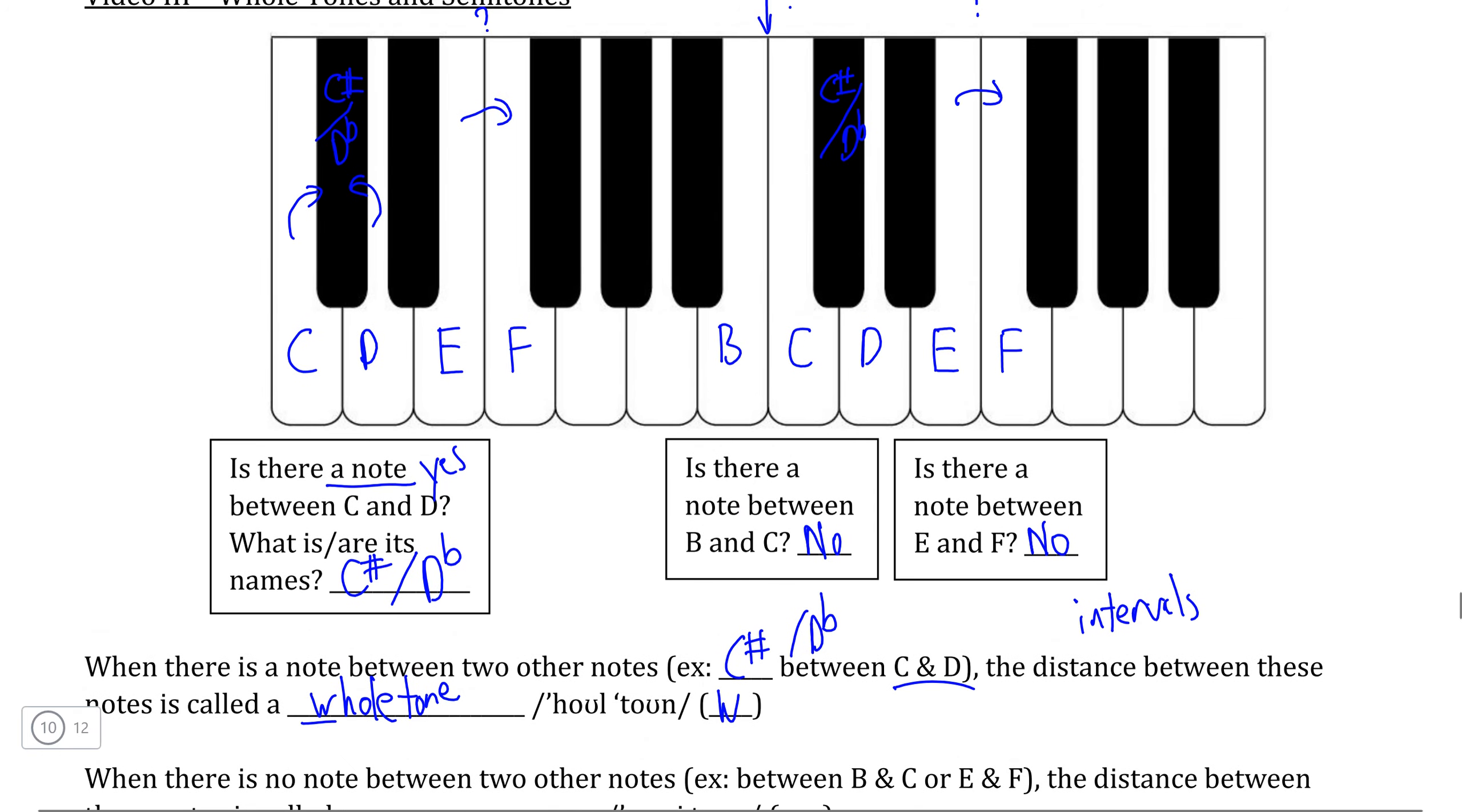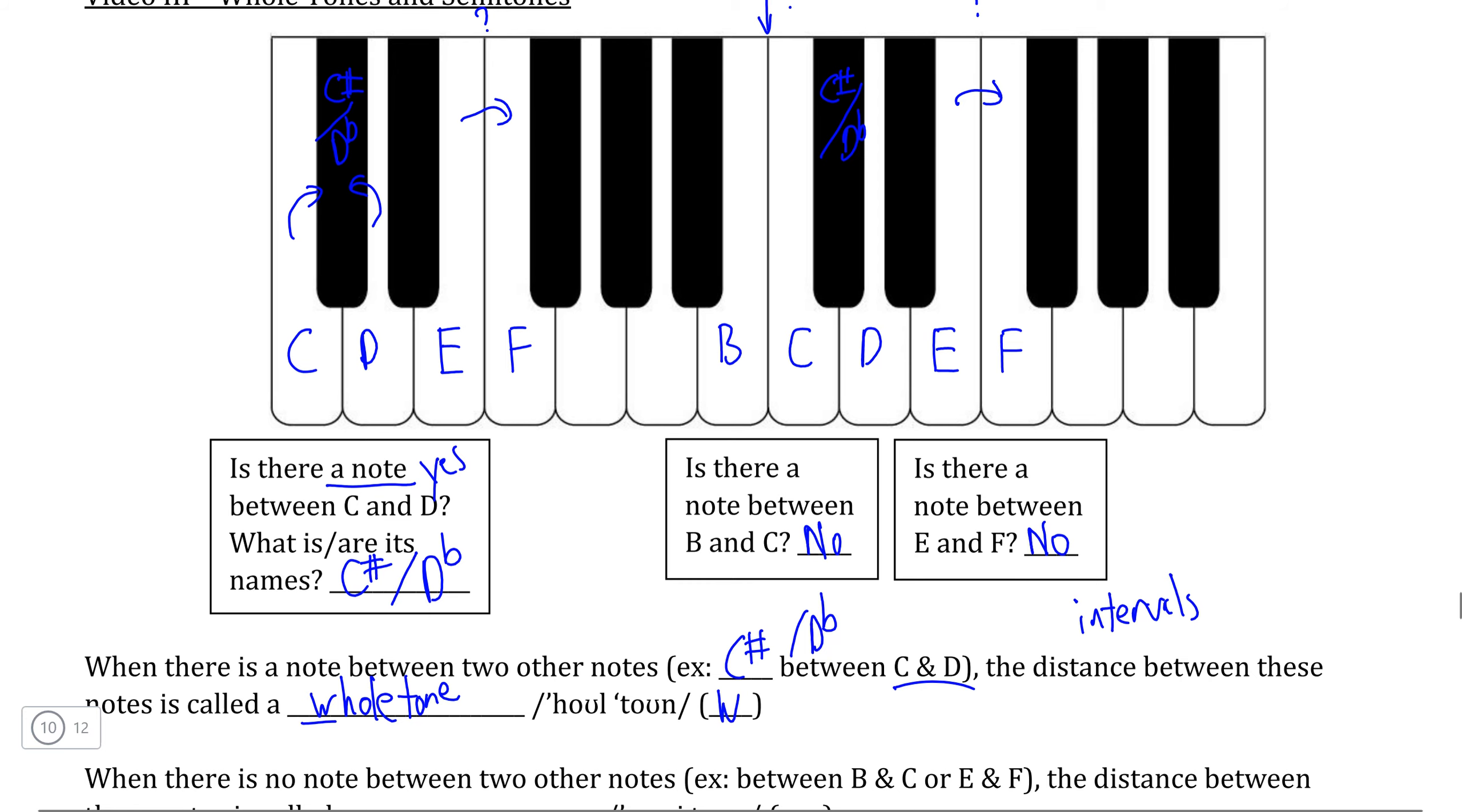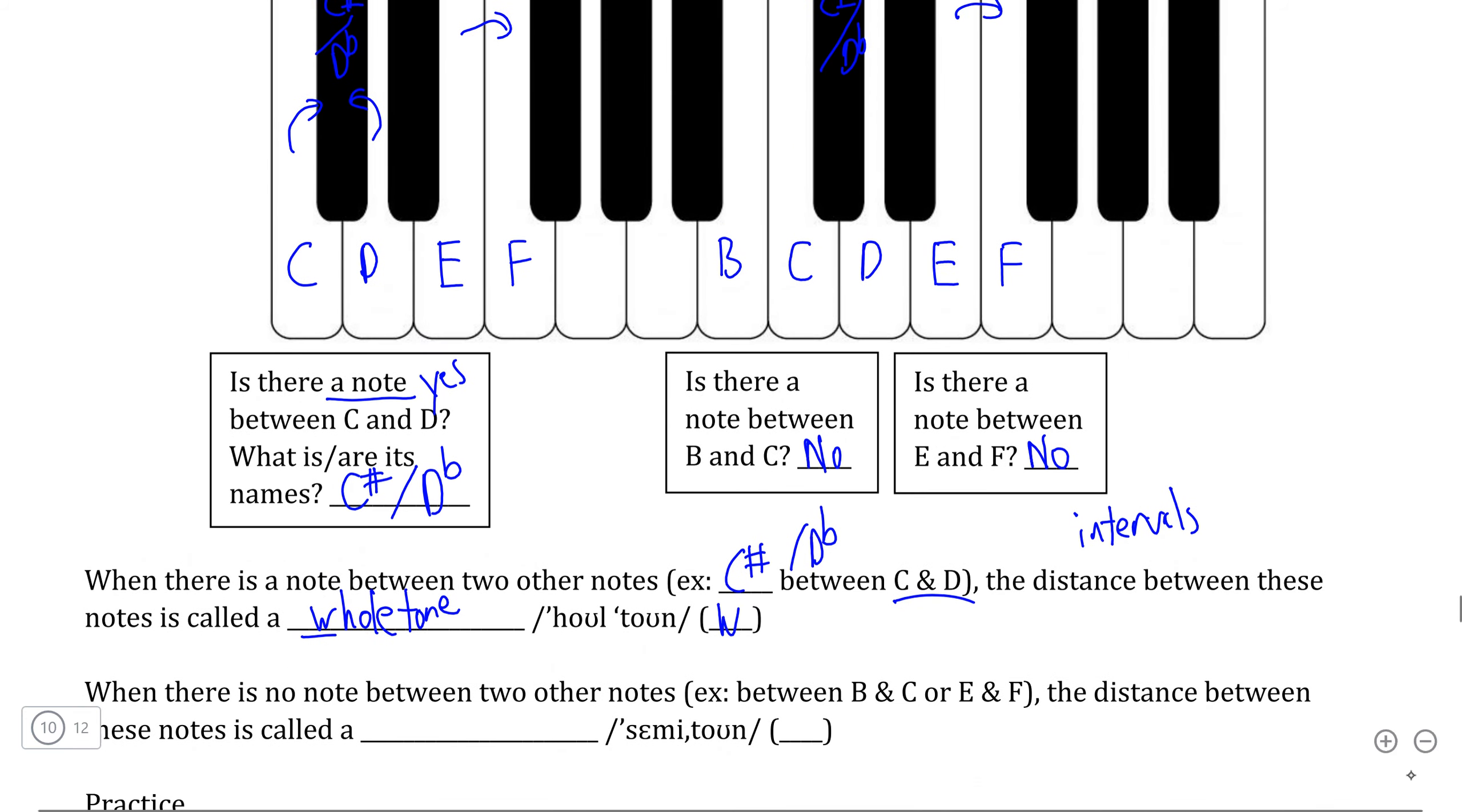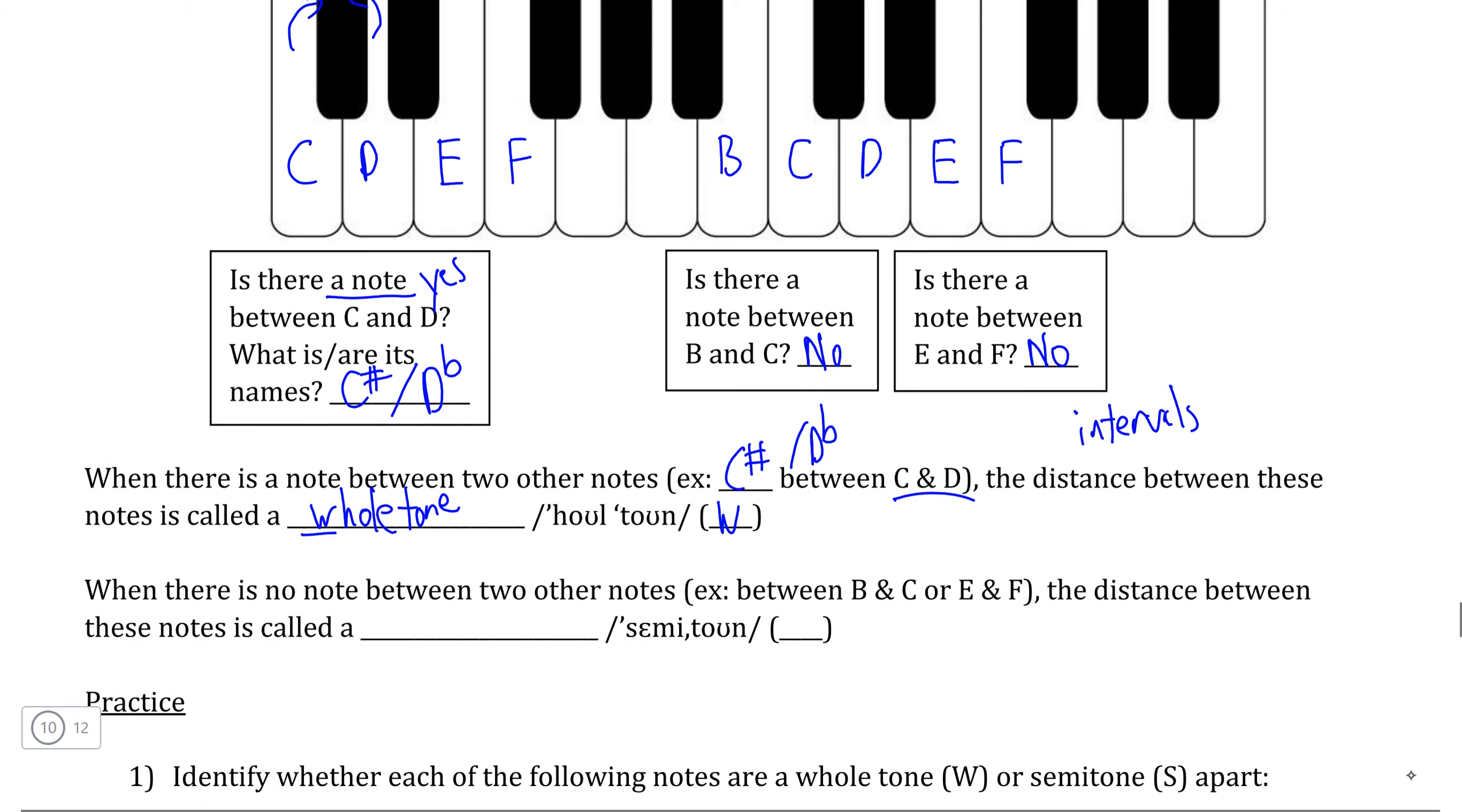Now the distance between E and F or between B and C is different because there is no pitch in between E and F or B and C respectively, meaning that the distance between B and C or E and F is only half the distance between C and D, because there is no intermediate pitch. And because it is half the distance of a whole tone, we would simply call this a semitone, which musicians often notate in shorthand as S.